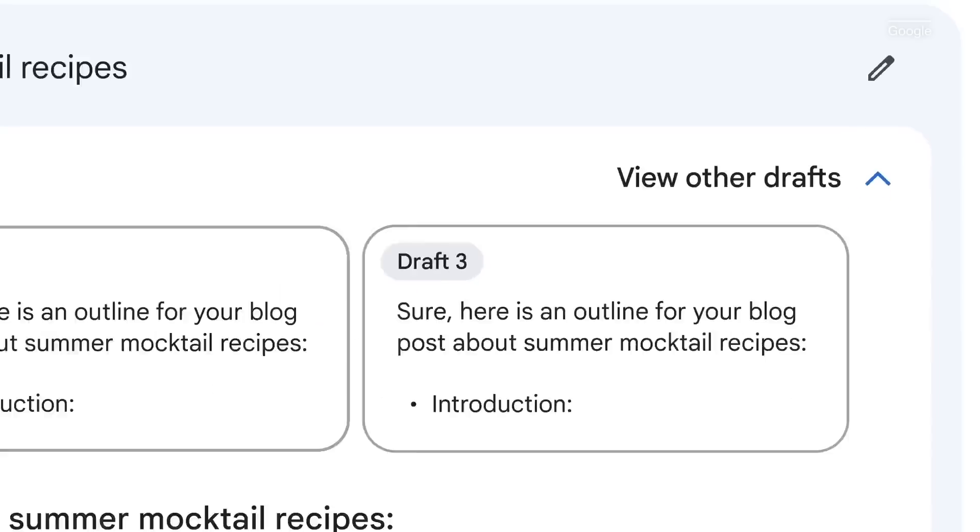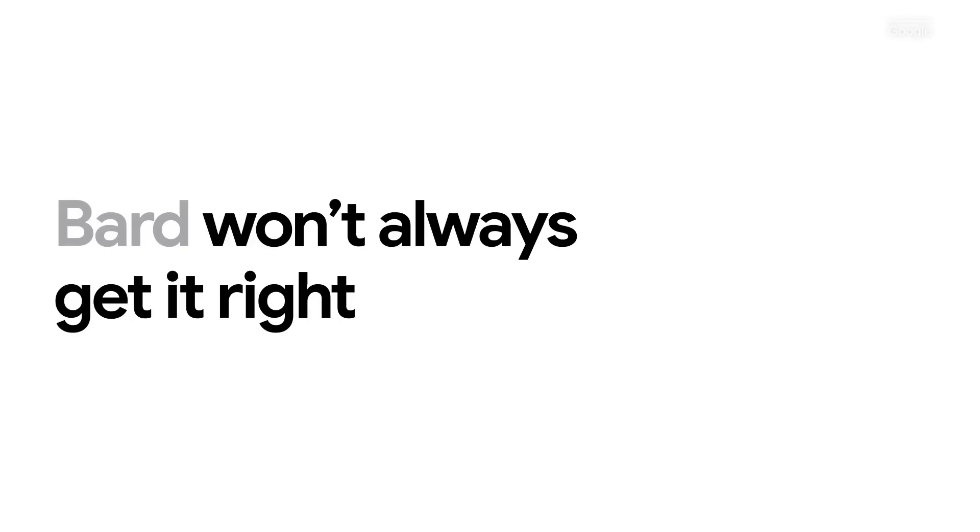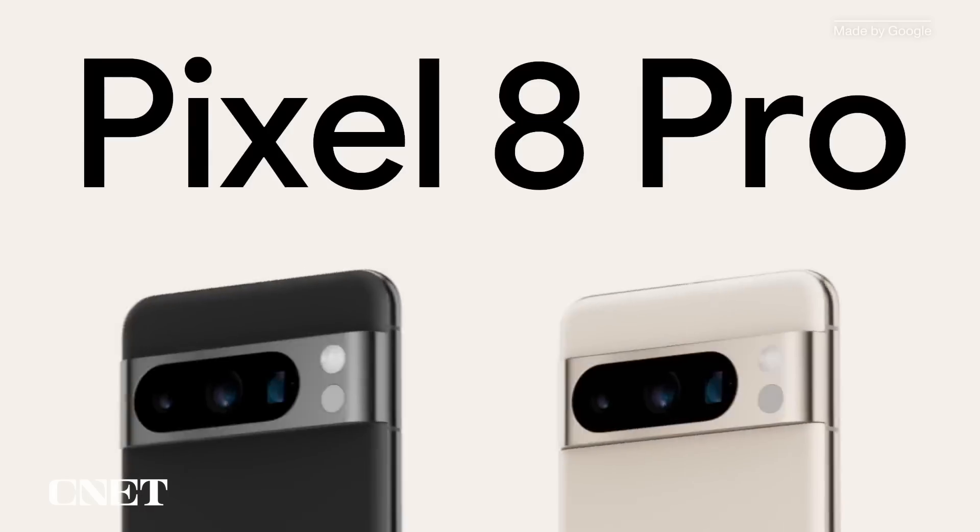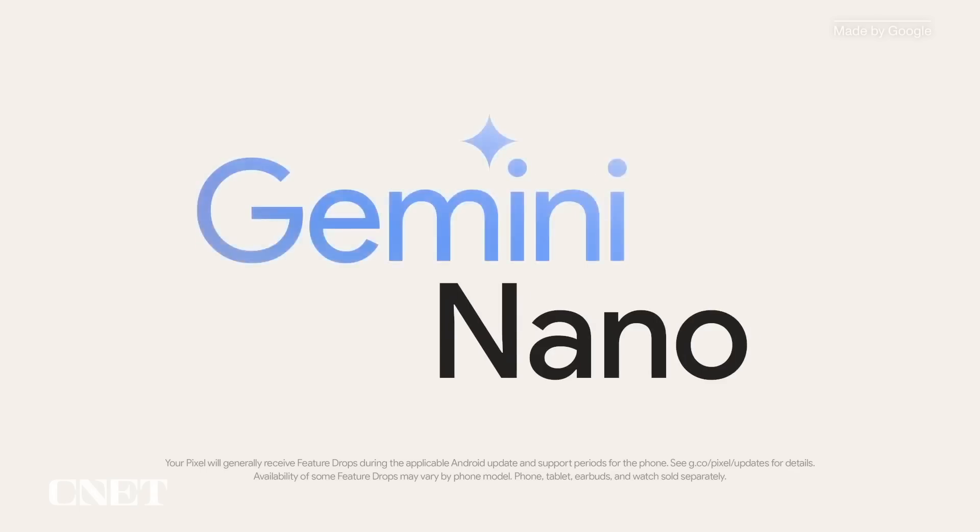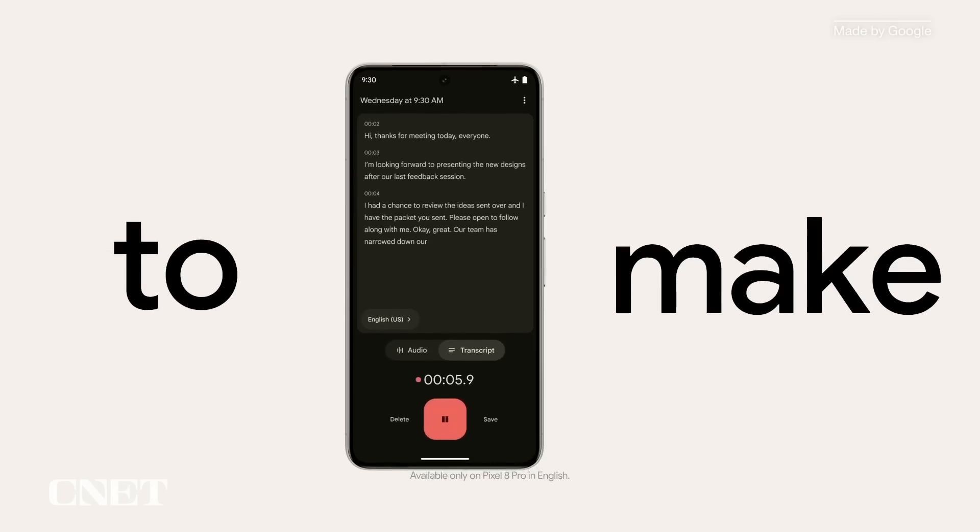There are three different versions of Gemini right now. The first version that we're able to see is called the pro version. That is a version that powers the Bard chatbot. Also arriving right now is the nano version. There are actually two flavors of the nano version and that is shrunk down into a size that will run on a smartphone.